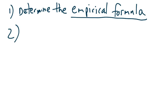We learned earlier how to find the empirical formula. If you have to do step one from scratch and they give you the information in grams, you've got to change it to moles, divide by the lowest number of moles, and hopefully if you get all whole numbers, that's the empirical formula. If you have a decimal, you have to do an adjustment.